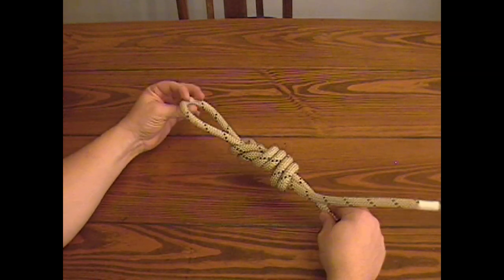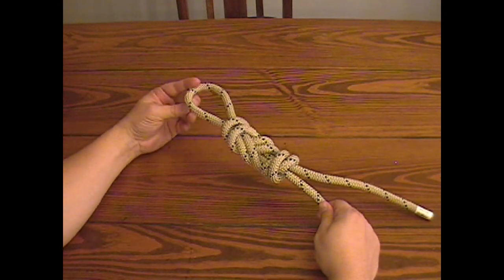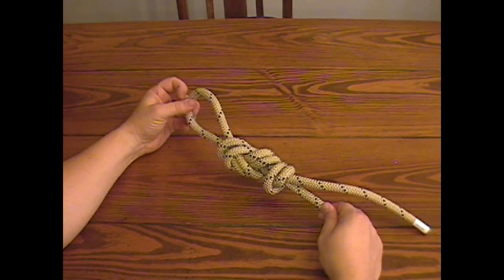You also find that knot is easy to visually inspect at greater distances than a bowline on a bite would be. So a trained eye can actually see that 20 feet away and know it's dressed correctly.